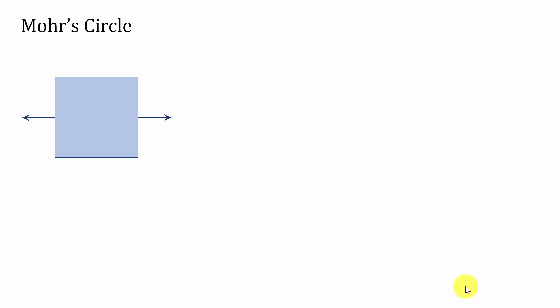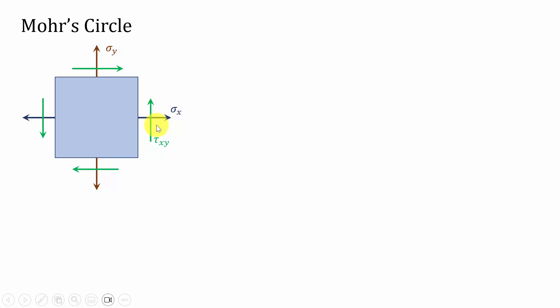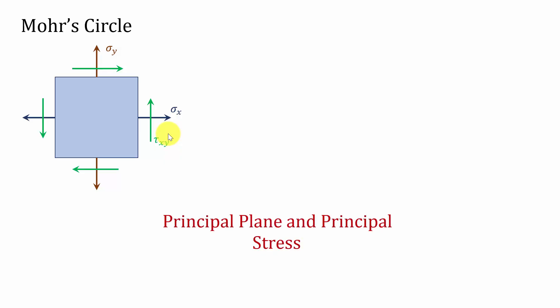In a plane stress condition, an element has three stresses on each side: sigma x, sigma y, and tau xy. Here sigma x is acting in the tensile direction, sigma y is also acting in the tensile direction, and tau xy is acting in the counterclockwise direction. At this state, the element has three stresses. If I rotate the element in any one direction at a particular angle, the tau xy value will be nullified — that is, at that particular plane there will be no shear stresses. That plane is called the principal plane and the normal stresses acting at that plane are called the principal stresses.